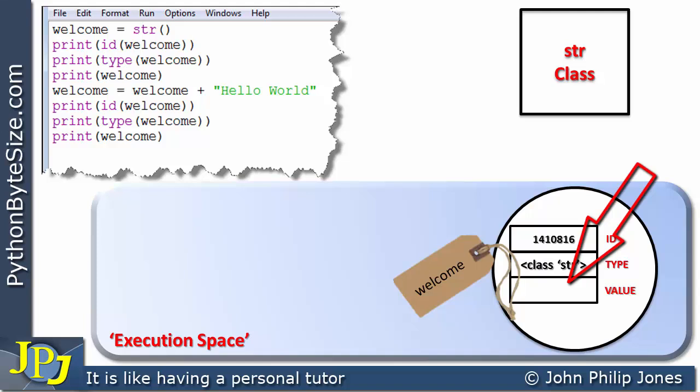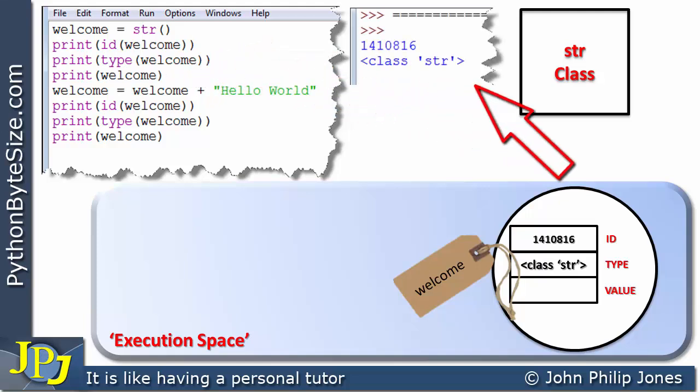Then of course we can see that here we print the ID, the type, and the actual string itself. So what we will have at runtime is shown here, when the ID is placed here, which is derived from obviously the object, we print the type which is again derived from the object and print it here.